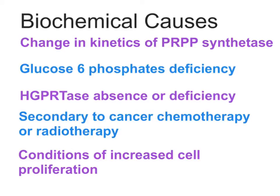Now let's move on to the biochemical causes of gout. One cause I would like to explain is a change in kinetics of the PRPP synthetase enzyme. The PRPP synthetase enzyme is involved in synthesis of PRPP, that is phosphoribosyl pyrophosphate. Note that phosphoribosyl pyrophosphate is a positive modulator for de novo biosynthesis of purines. Whenever PRPP levels are high, there will be increased purine synthesis, because PRPP acts as a positive modulator on the regulated, rate-limiting enzyme in purine biosynthesis — glutamine phosphoribosyl amidotransferase.